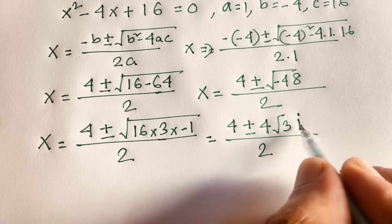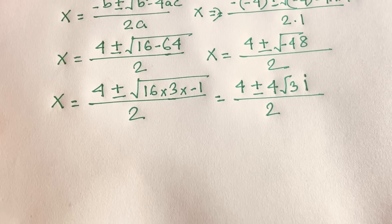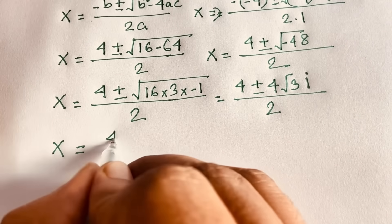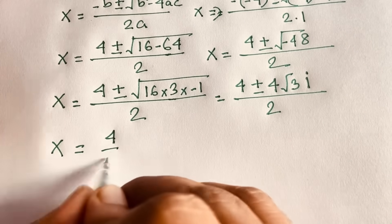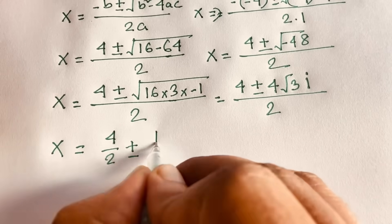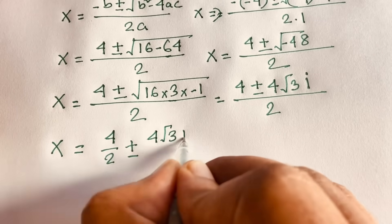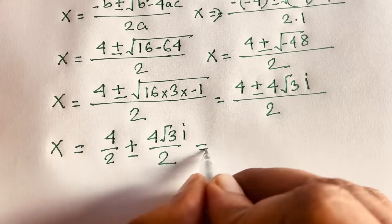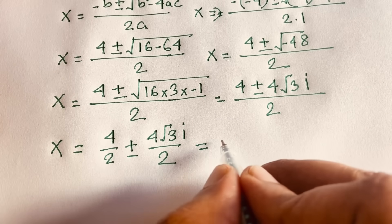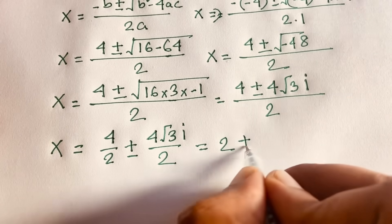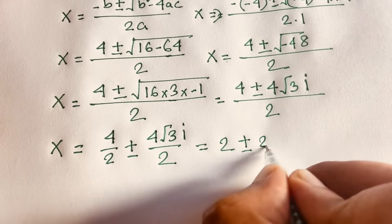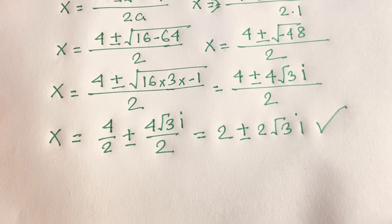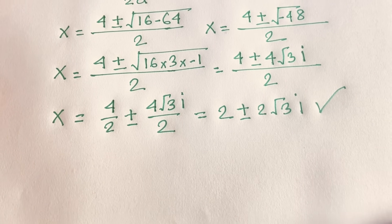Dividing both terms by 2: x equals 4 over 2 plus or minus 4√3i over 2. This gives our final value of x: x equals 2 plus or minus 2√3i.